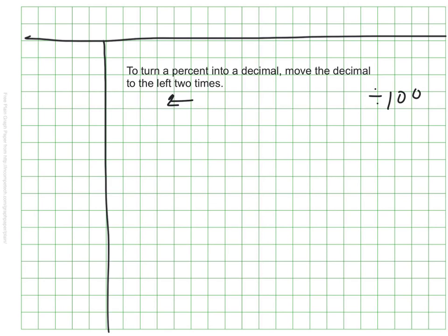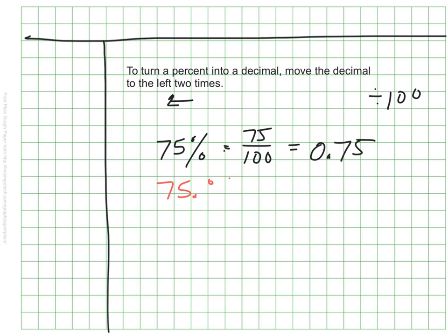75% means 75 out of 100, because that's what percent means, so that would be the fraction 75 hundredths, which can be written as 0.75. You can also see that 75% has an implied decimal at the end of the whole number. If I move it to the left twice, we end up with 75 hundredths — the equivalent decimal.